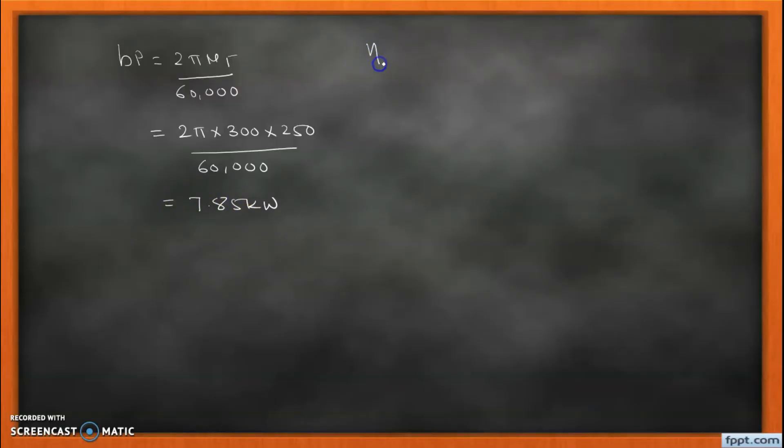Now students, we are calculating the indicated thermal efficiency, which equals IP/(ṁf × CV). So IP we calculated using the formula, and IP we got 12.308, and the fuel consumption is 4.2/3600, and the calorific value is 41,000. So indicated thermal efficiency we get is 25.73%.